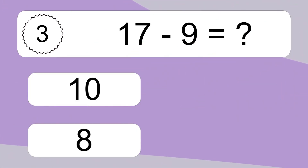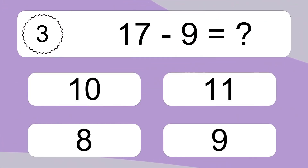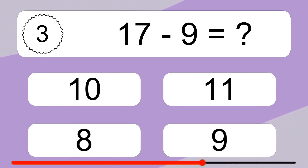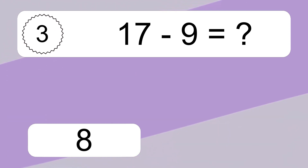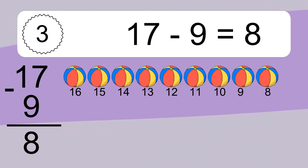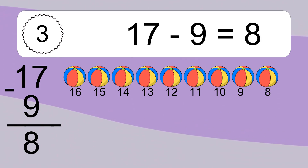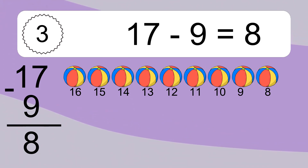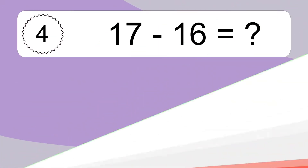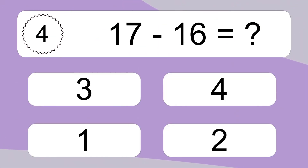17 minus 9 equals what? 17 minus 9 equals 8. Let's count it: 16, 15, 14, 13, 12, 11, 10, 9, 8.